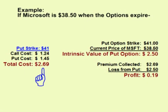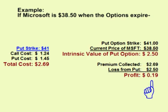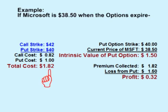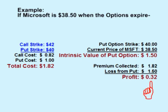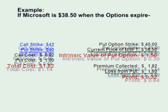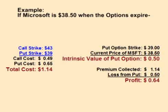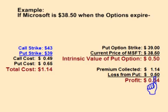The trader collected $2.69 up front, but the put option has $2.50 worth of intrinsic value, so the profit is only $0.19 a share. The near-money short strangle collects a premium of $1.82 up front. If Microsoft is at $38.50, the put option has $1.50 worth of intrinsic value, meaning that the profit for this trade would be $0.32 per share. At $38.50, the short strangle using further out-of-the-money options has the highest profit. Selling a $43 call and a $39 put means the trader collected $1.14 up front. The call option expires worthless, and the put option has $0.50 worth of intrinsic value, so the profit on this trade is $0.64 — twice the other short strangle.